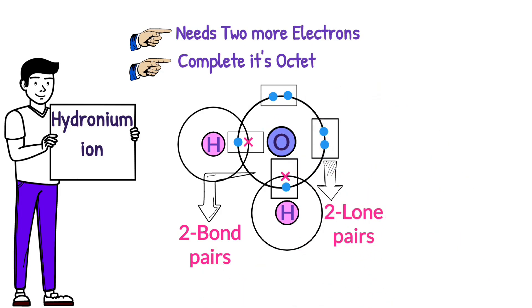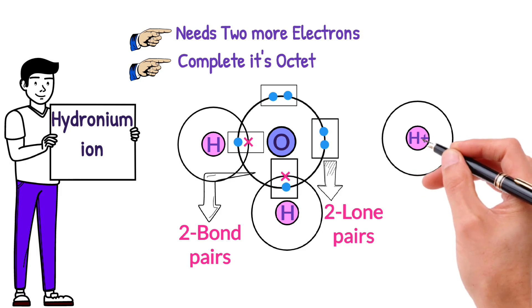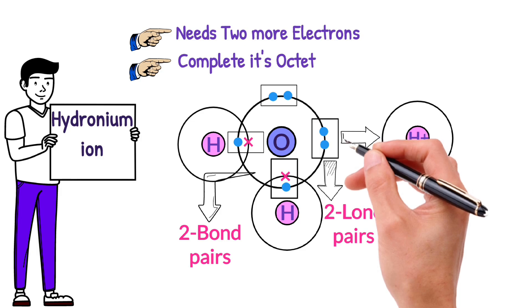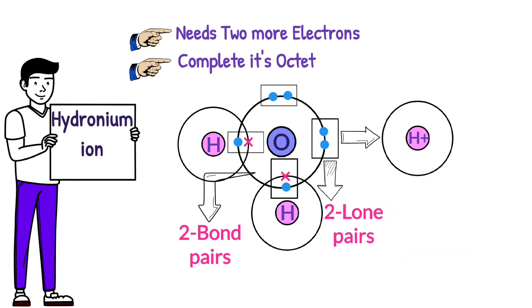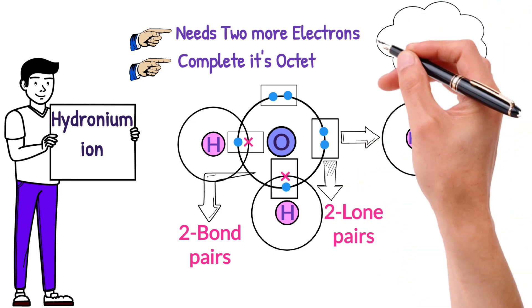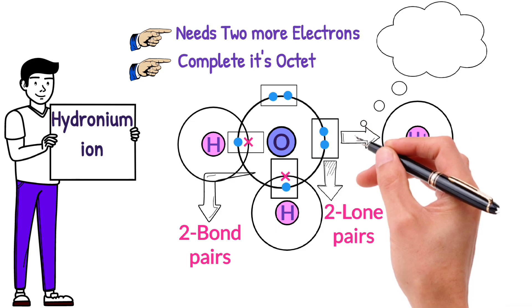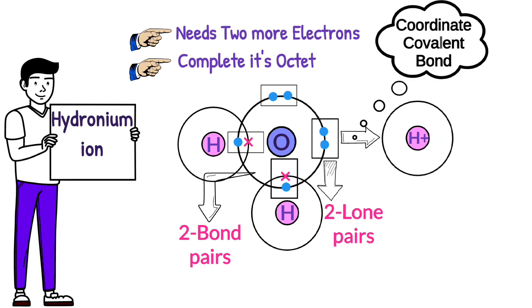Imagine a hydrogen ion floating around. It's just a proton, so it's missing an electron. The oxygen in the water molecule, being the great atom it is, offers one of its lone pairs to the hydrogen ion. So the bond forms between oxygen and the hydrogen ion, known as coordinate covalent bond, and the compound known as hydronium ion.